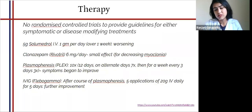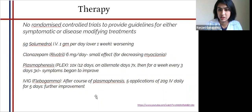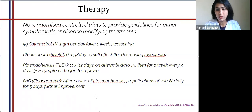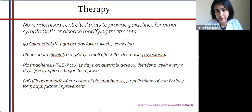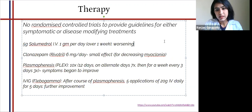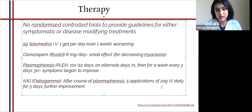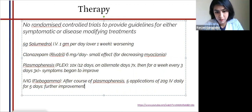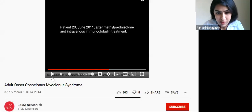Moving on to therapy — because it's such a rare disorder, there are no strict guidelines for symptomatic treatment or eradication of the disease. It's similar to other autoimmune diseases where you first start with high-dose steroids, and if unresponsive, move on to plasmapheresis, IVIG, and some symptomatic treatment. For our patient, we started with five grams of methylprednisolone over one week, but there was still worsening of symptoms indicating non-response. Then clonazepam was given for decreasing the myoclonus symptomatically, but this didn't help much either. So we started plasmapheresis over a long period of time, and then symptoms began to improve, and IVIG sorted out the rest of the problem with significant improvement.